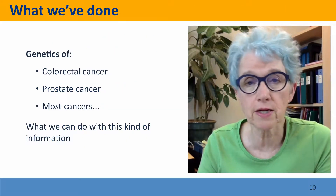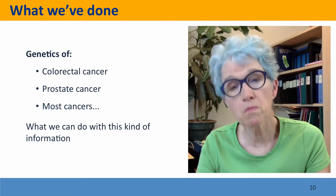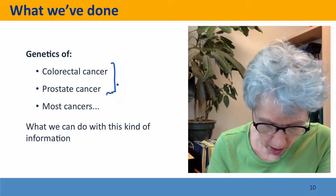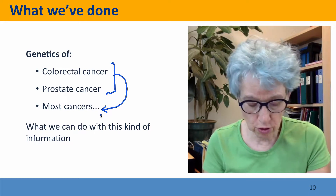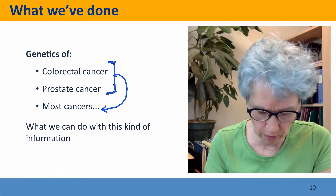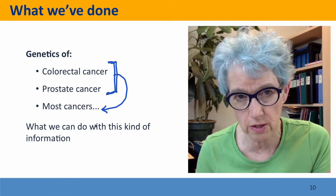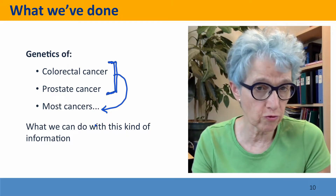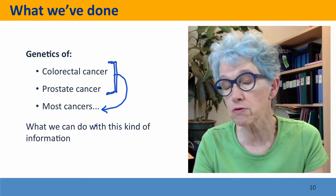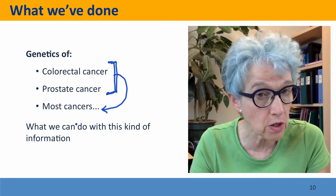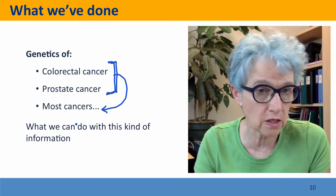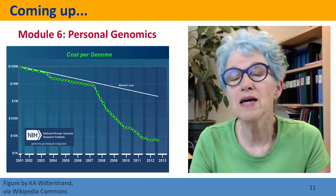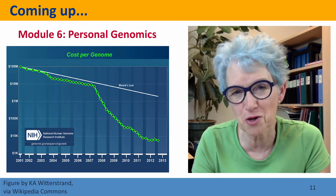We've talked about the genetics of colorectal cancer and prostate cancer. The most important takeaway is that what applies to these cancers applies to most cancers — because these are common cancers, they've received the most study, but most cancers share the same properties: many risk factors each making a small contribution, great diversity in tumor mutations, and complex causation. But there are ways this information can be used, as described. Coming up next is Module 6, where we'll talk about personal genomics.